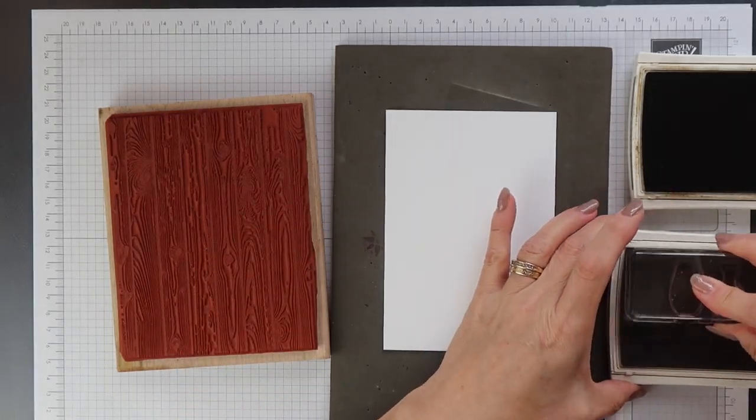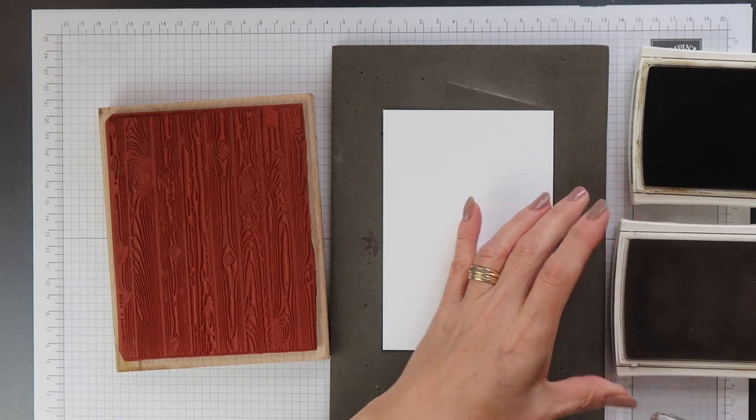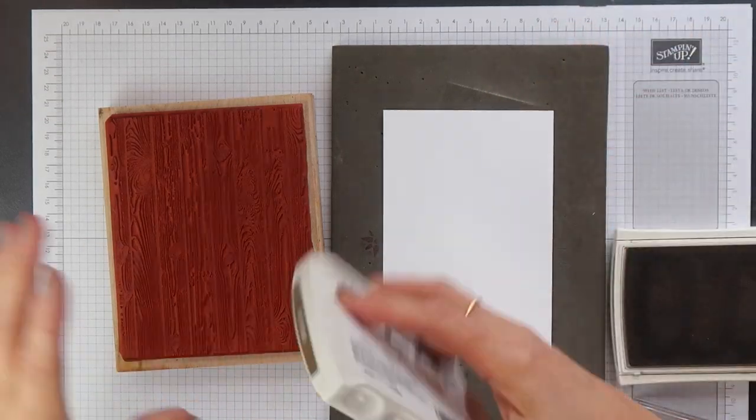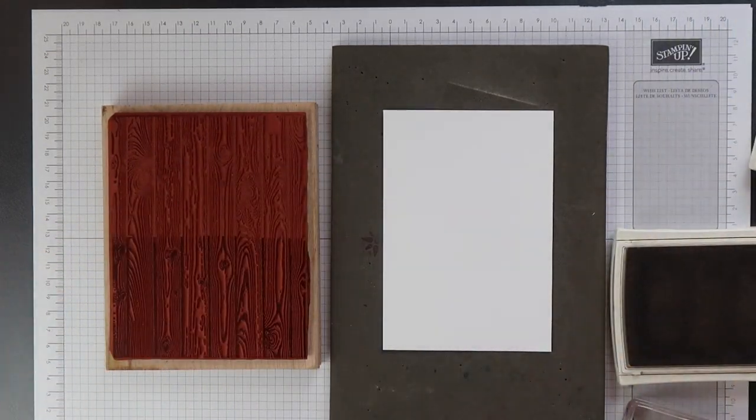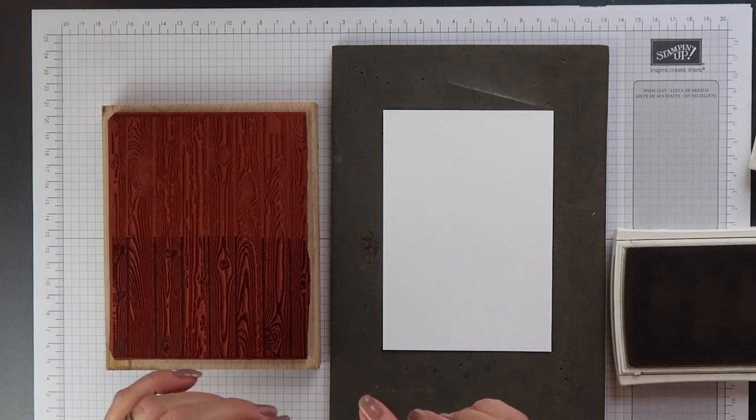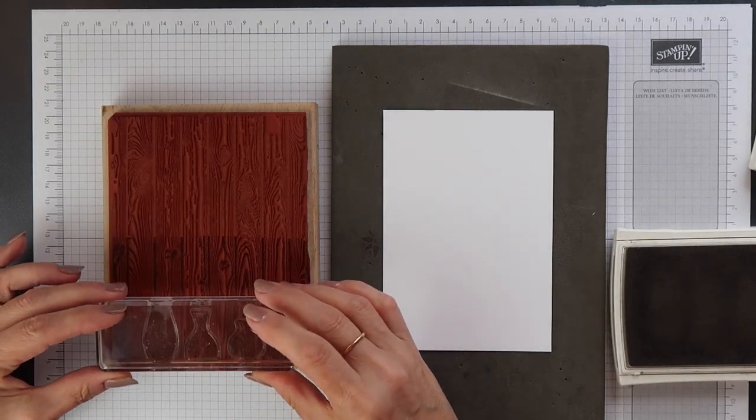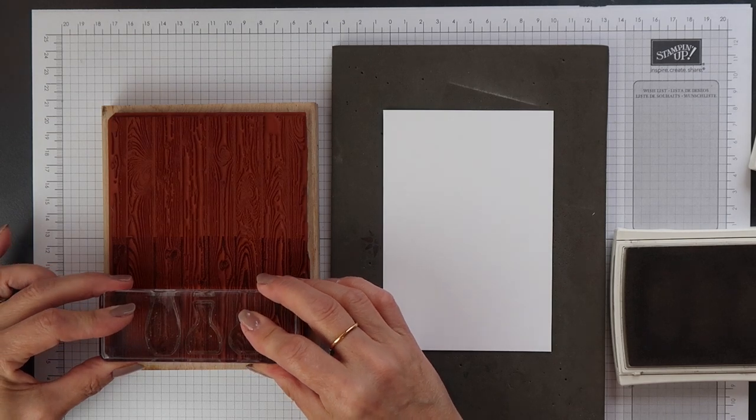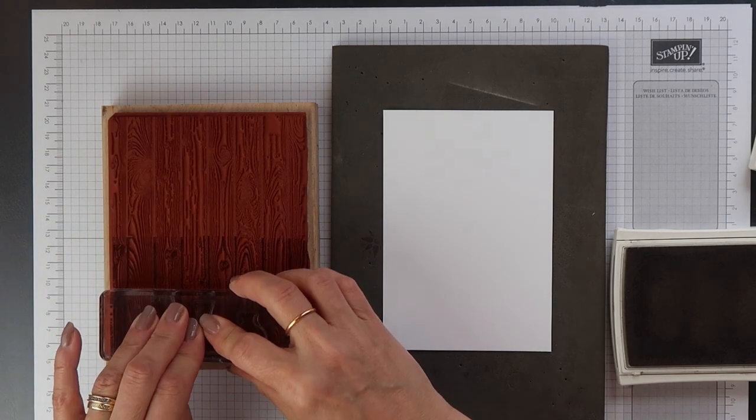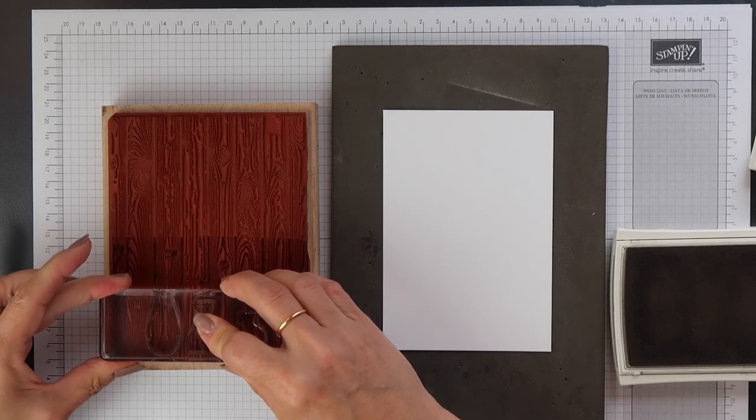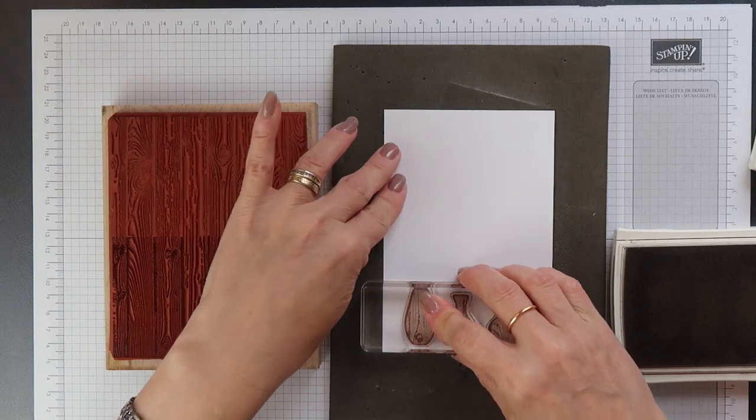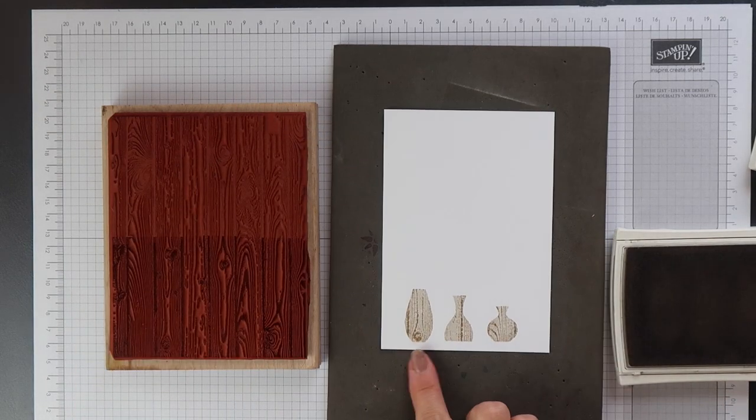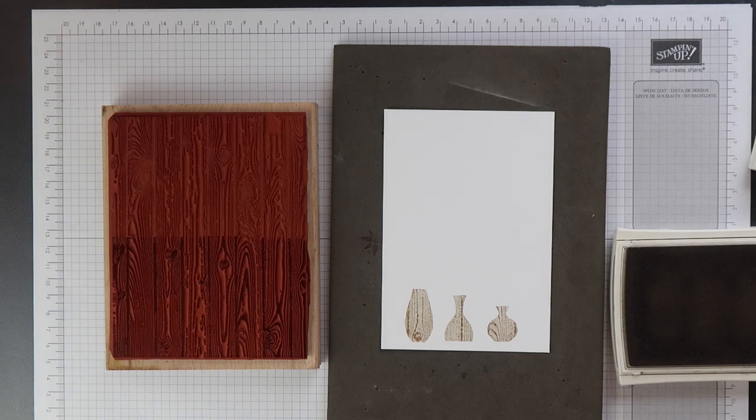I'm going to ink up my vases with the Sahara Sand ink and then I'm going to ink up the hardwood stamp with the Soft Suede and I'm just holding them there for a second or two. You just have to be a little careful that they don't slip as you press them down and then I can stamp my images and there you have it. This really is a very quick and simple technique to do. Anybody can do it.